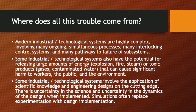There are certain features of modern industrial and technological systems which make accidents more hazardous. First, modern industrial and technological systems are highly complex. They involve many ongoing simultaneous processes, many interlocking control systems, and many pathways to failure of subsystems. This is the point especially underlined by Charles Perrow, but it comes out in almost everything that we've read.